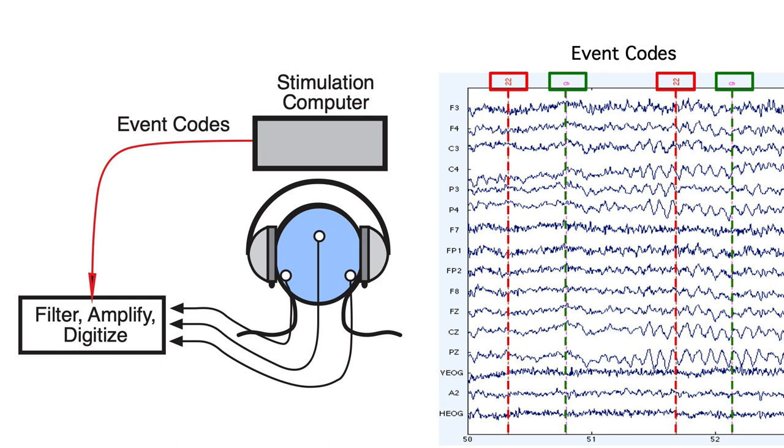Any time a stimulus is presented or a response occurs, an event code is sent from the stimulus presentation computer to the recording computer. This indicates what the event was and exactly when it occurred.